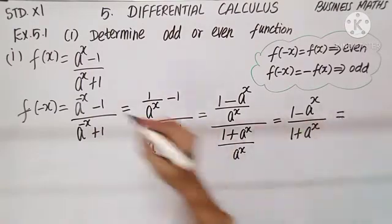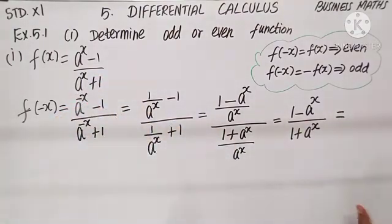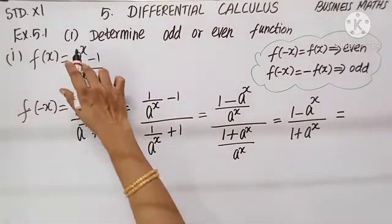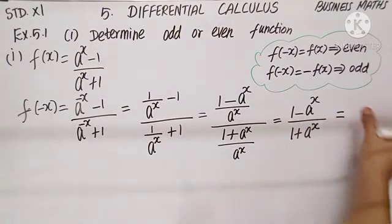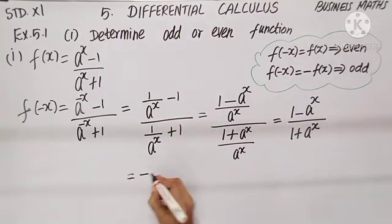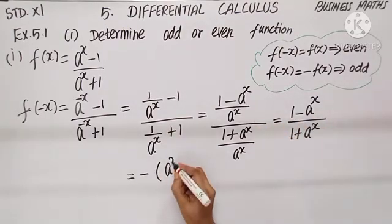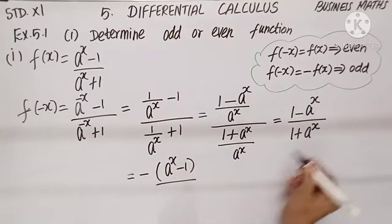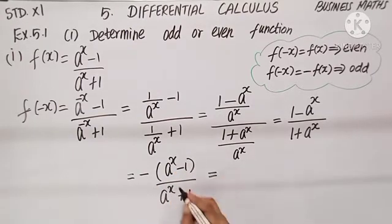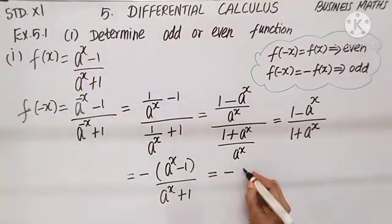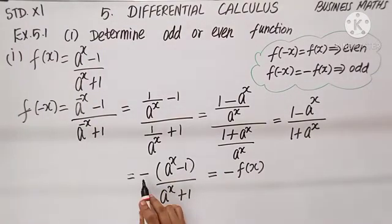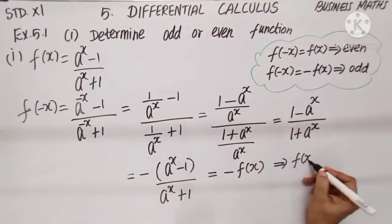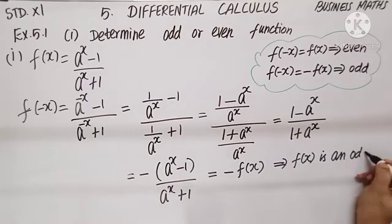Look at the question. The denominator aˣ + 1 is the same. But what about the numerator? In the original, I have aˣ - 1, whereas here I have 1 - aˣ. How shall I rewrite it? Taking the minus symbol out, it becomes -(aˣ - 1)/(aˣ + 1), which is nothing but minus f(x).